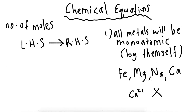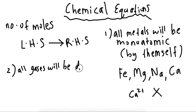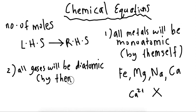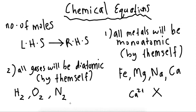Second rule: all gases by themselves will be diatomic, meaning two atoms — and this is only when they are by themselves. If I have hydrogen gas, it's H2. Oxygen gas is O2. Nitrogen gas is N2. This is only when they are by themselves. When they combine with something else, we follow the same rules as chemical formulae.